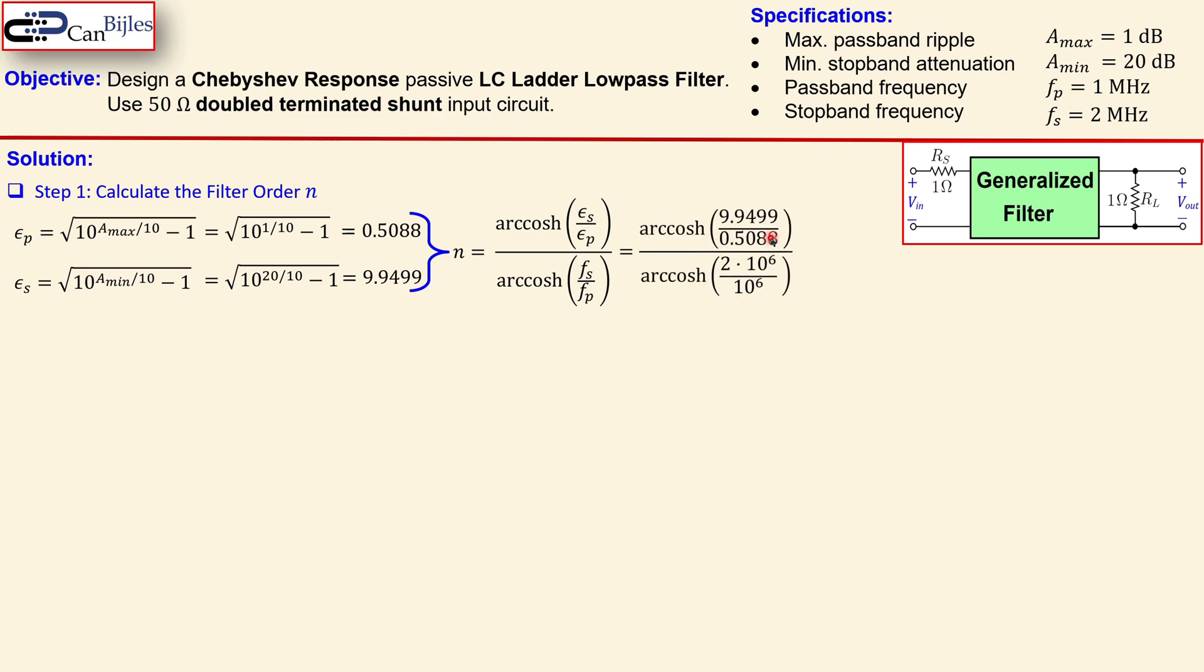Now when you substitute the values you get here 2 MHz and 1 MHz and also the values from the Epsilons you get now 2.7078. I must say 3. And this we need integer values that means we need a third order Chebyshev response filter.